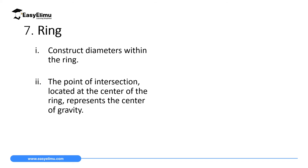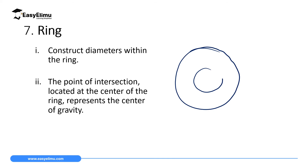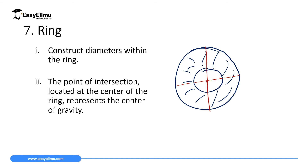Another shape is a ring, which has a hole in the middle. To determine the center of gravity of a ring, construct two diameters. Where they meet in the middle — where the hole is — that will be the center of gravity. So the center of gravity of a ring lies inside the hole and is not part of the ring itself.